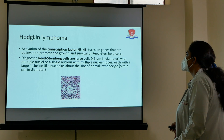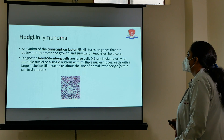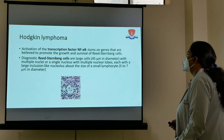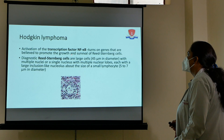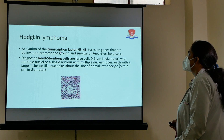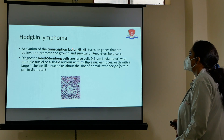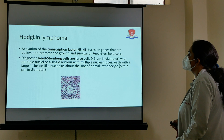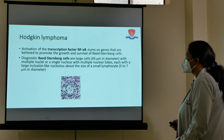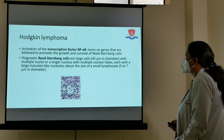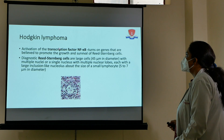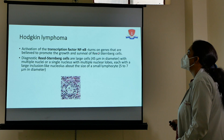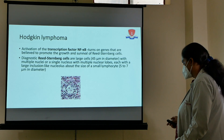You must also remember the transcription factor NF-κB, which is very important in the pathogenesis of Hodgkin's lymphoma. This transcription factor turns on genes that promote the growth of RS cells.